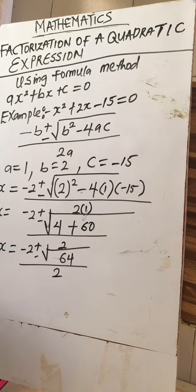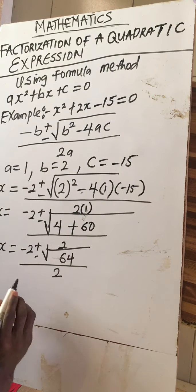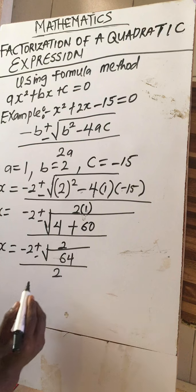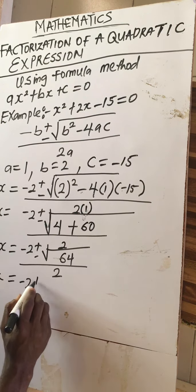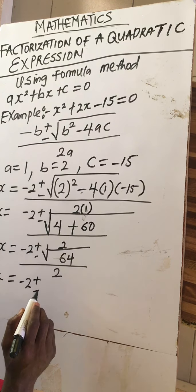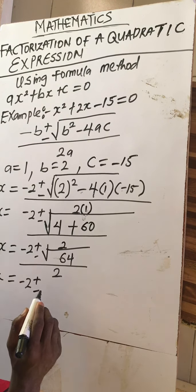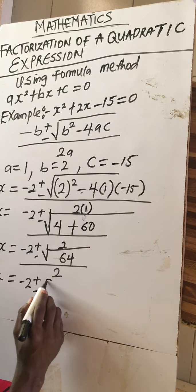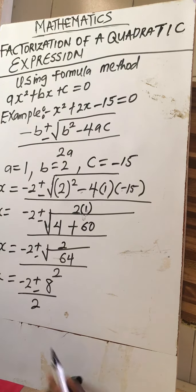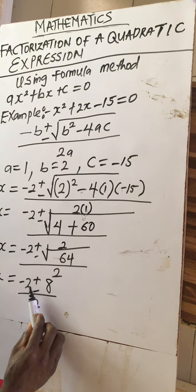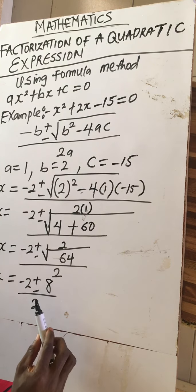So we have x equal to minus two plus or minus the square root of 64, all over two. We find the square root of 64, which is eight, divided by two. Now we split on the plus or minus sign.